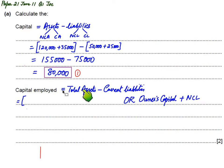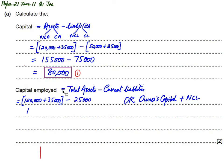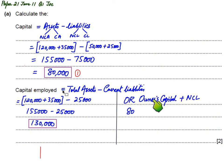The second method for finding capital employed is owners capital plus non-current liabilities. Using the first formula: total assets are 155,000 and the current liability (due within a year) is 25,000. So 155,000 minus 25,000 gives capital employed of 130,000.